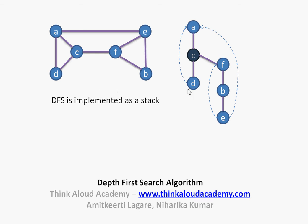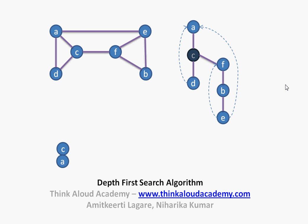Depth first search is generally implemented using a stack. In the stack I put A, then stack up C. From C I stack up D, and since I hit a dead end I remove D and go to F, stacking F on top of C. From F I go to B, so B sits on top of F. From B I go to E, so E sits on top of B. Since we reach a dead end at E, E gets dropped and I come back to B. I check if I can go anywhere else from B.